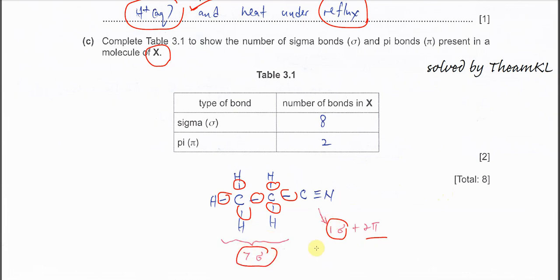So that's why here is seven just now, plus one. So it's total eight sigma bonds. The C triple bond N, the two bondings are pi bonds. So that's why pi bond is two. That's all for this question three. Thank you.